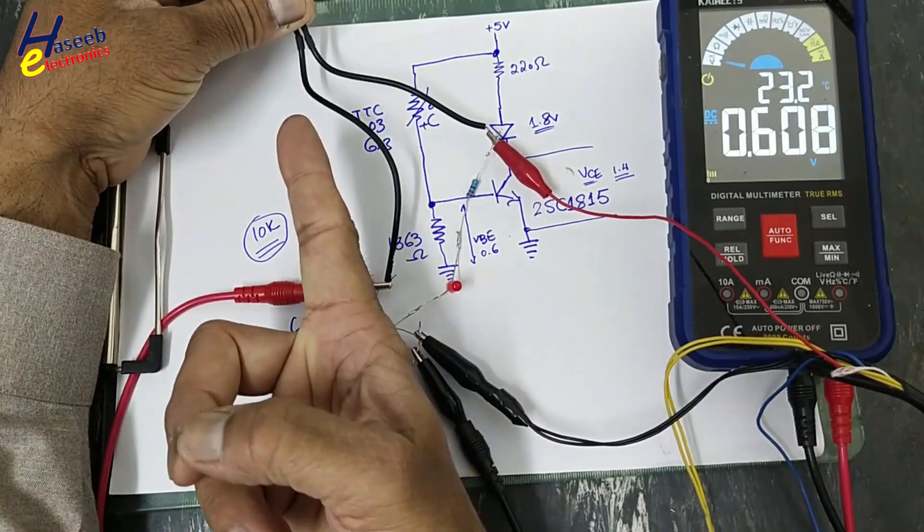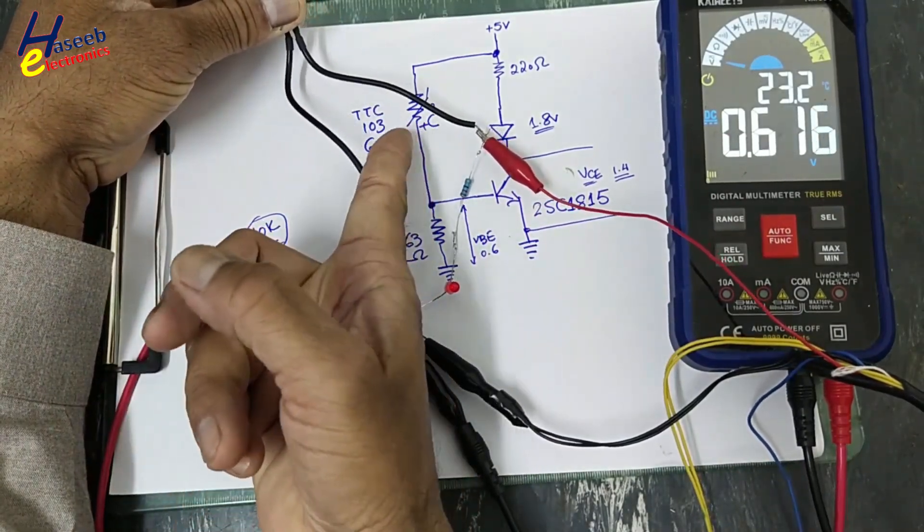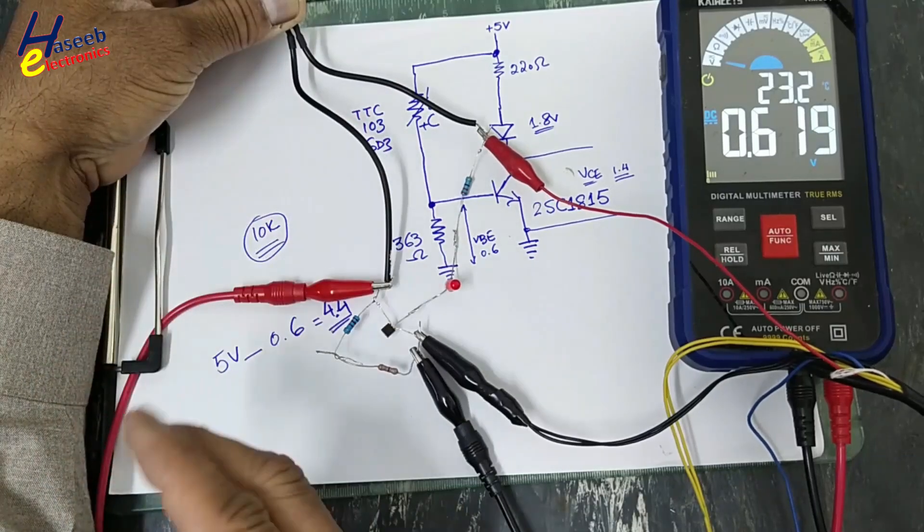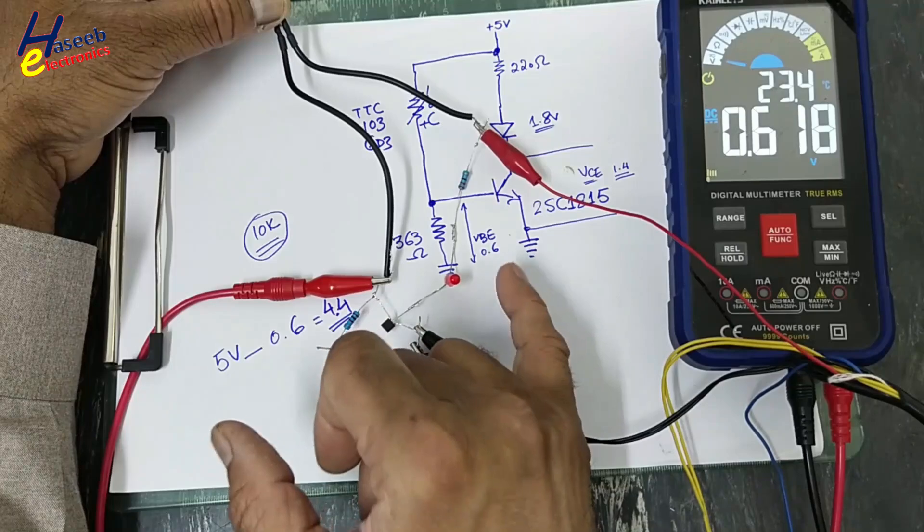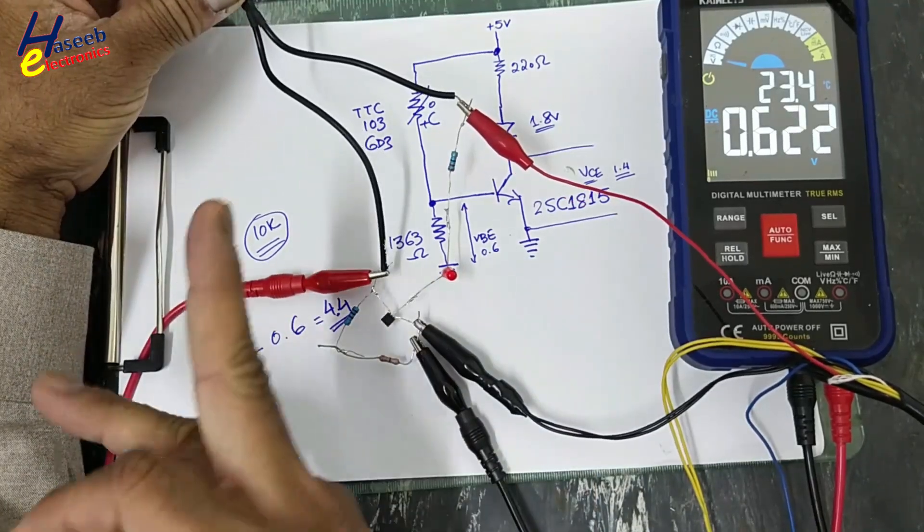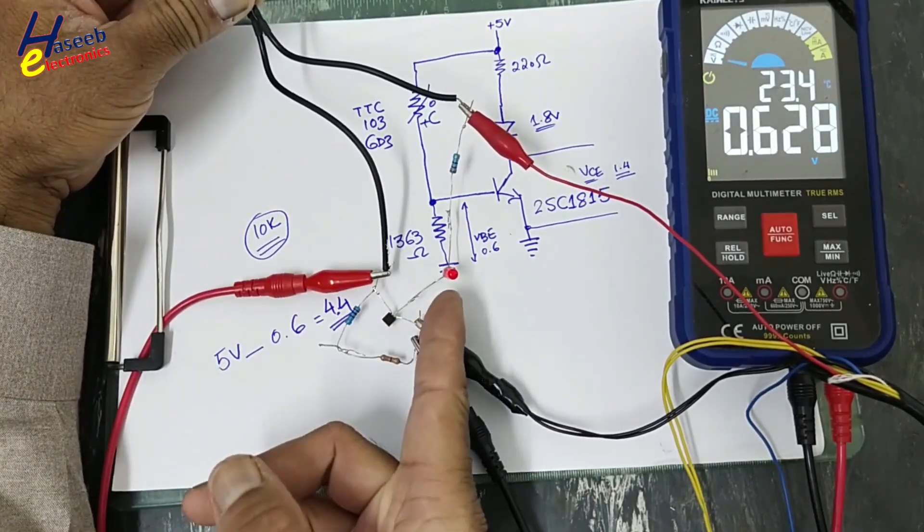When temperature increases, the resistance of this NTC thermistor decreases. Here we are using NPN transistor in common emitter configuration. When temperature is increasing, the LED light is increasing linearly.